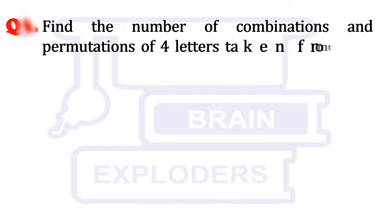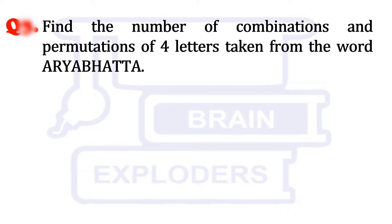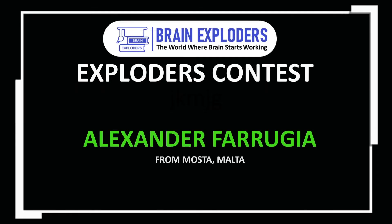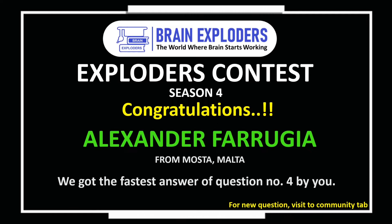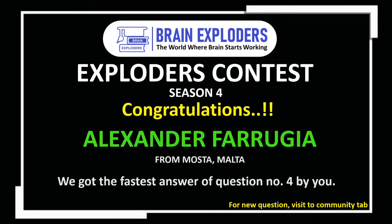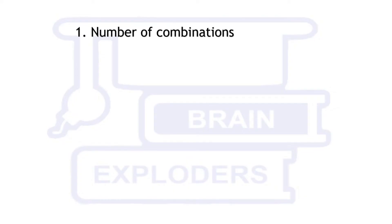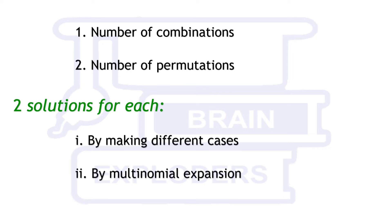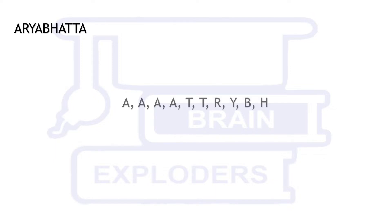Find the number of combinations and permutations of four letters taken from the word RAABHTT. The question asks us to find the number of combinations of four letters from the given word, and the number of permutations of all kinds of four letters. In total, we will discuss two solutions for this question: first by making different cases, and second with the help of multinomial expansion.